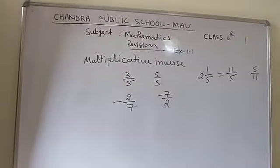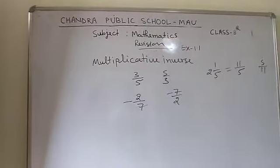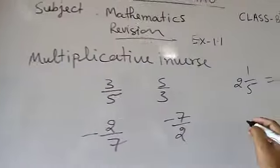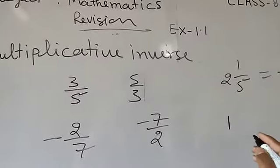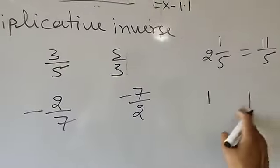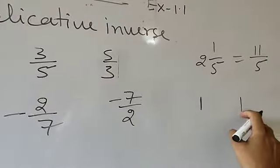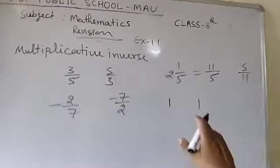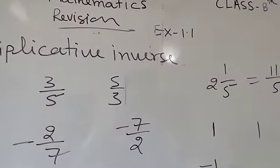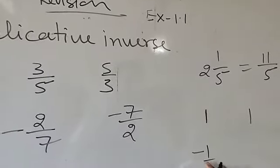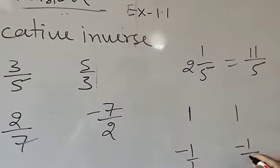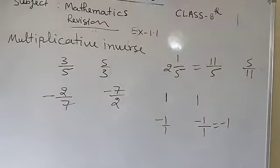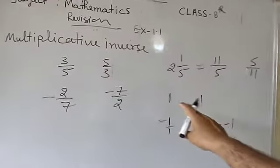Which number has its own multiplicative inverse — that is the same? For example, what is the multiplicative inverse of 1? That will be 1. So 1 is the number whose multiplicative inverse is 1. Is there any other number whose multiplicative inverse will be the same number? Yes, that is minus 1. If minus 1 is written as minus 1 upon 1, its multiplicative inverse will again be minus 1 upon 1, which equals minus 1. So there are two numbers whose multiplicative inverse will be the same: 1 and minus 1.